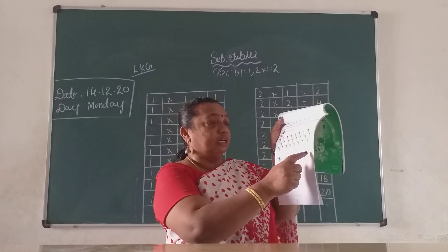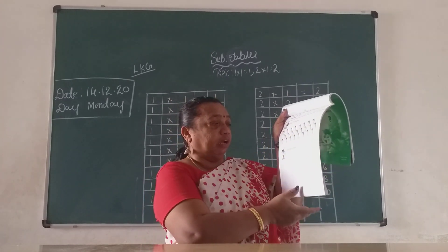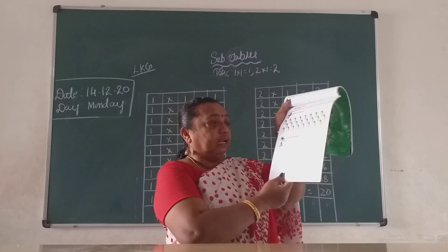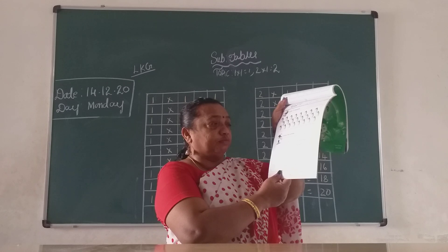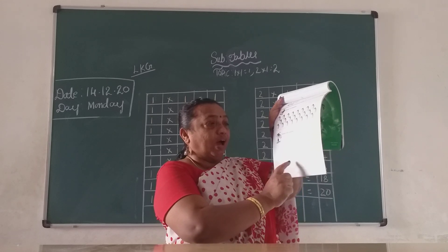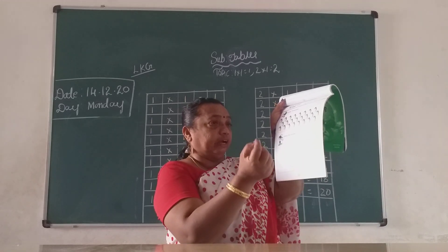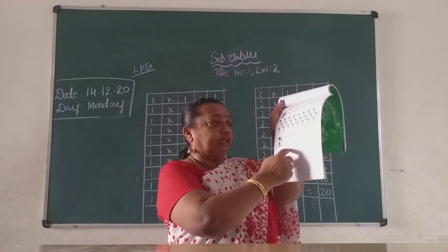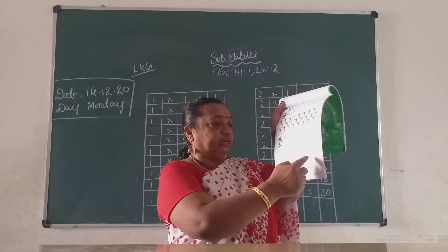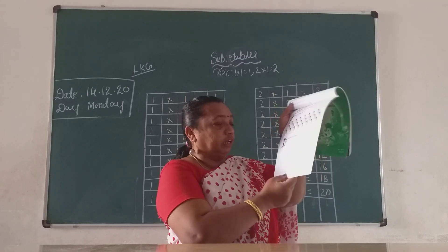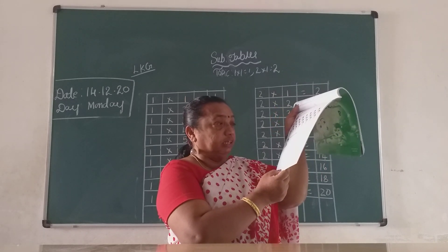How many mangoes, children? Seventeen mangoes. Color the number — which number, children? One, seven — seventeen. You have to take out your color pencil and color it, children. Page number fifty-three.